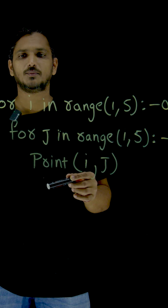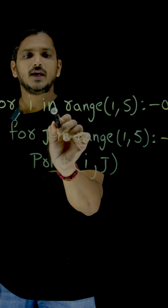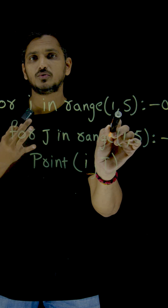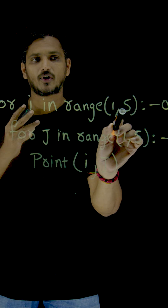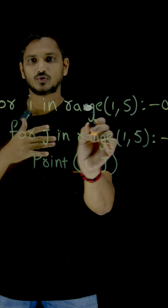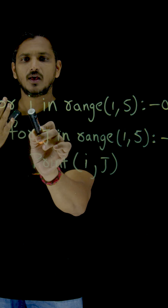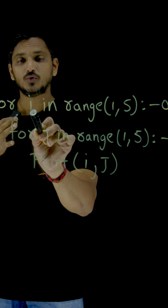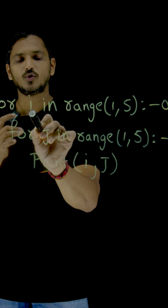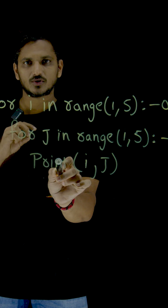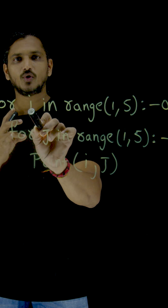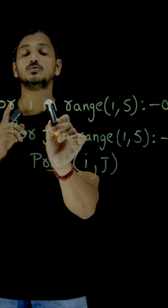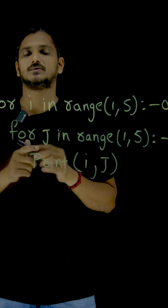Coming to the concept — for i in range of 1 to 5, what are the values that belong here? 1, 2, 3, 4. 5 is not considered. So i is going to take 1 and execute the body, take 2 and execute the body, take 3 and execute the body, take 4 and execute the body. This outer loop is going to execute 4 times.